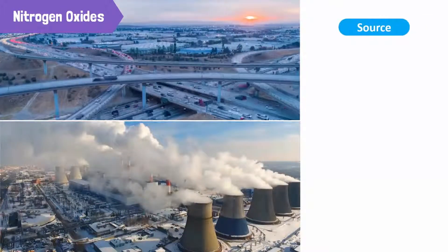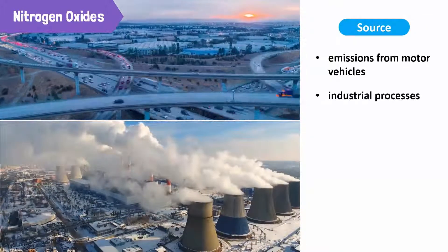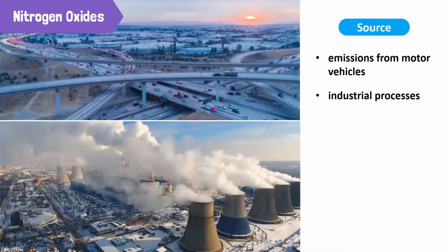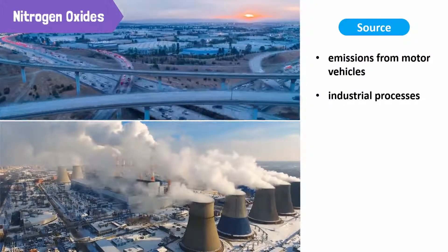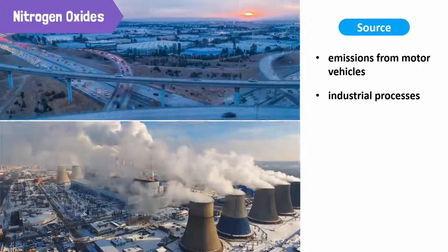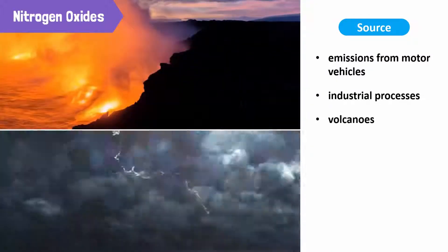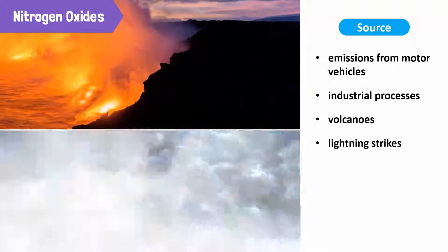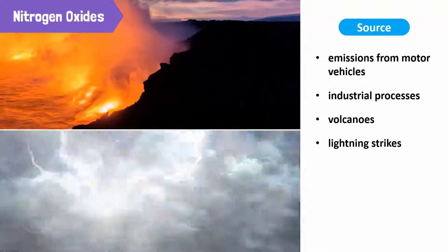Nitrogen oxides are emitted into the atmosphere from motor vehicles and industrial processes. However, they naturally occur in our atmosphere too, from volcanoes, oceans, and lightning strikes.